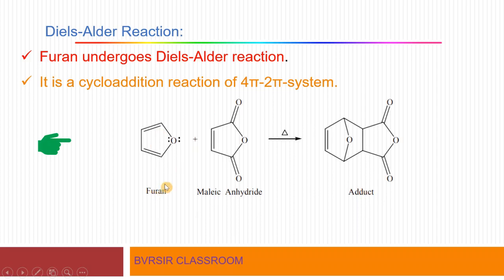In furan, there is a 4π system — two pi bonds, each contributing 2 pi electrons, giving 4 pi electrons total. Maleic anhydride has one pi bond contributing 2 pi electrons — it is a 2π system. When furan (4π, the diene) and maleic anhydride (2π, the dienophile) come together, a cycloaddition reaction occurs and an addition compound called an adduct is formed. This is called the Diels-Alder reaction.